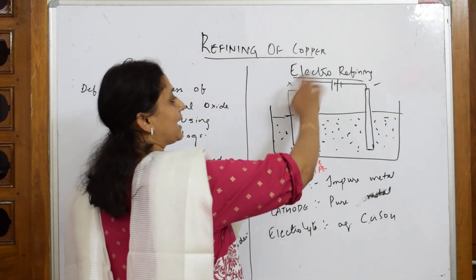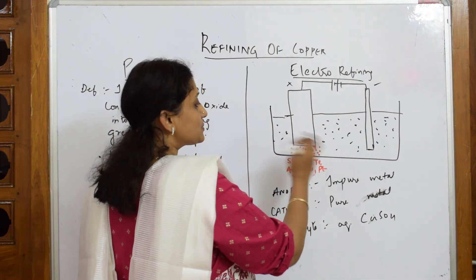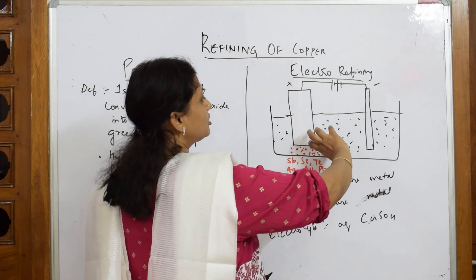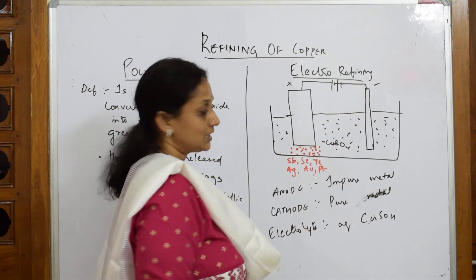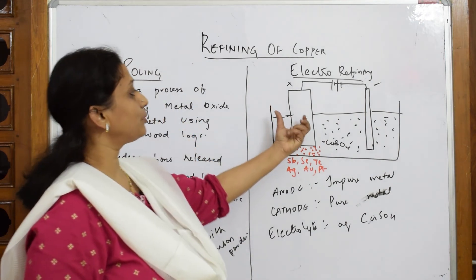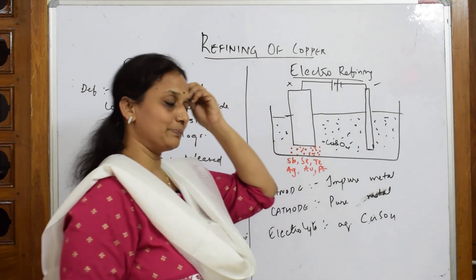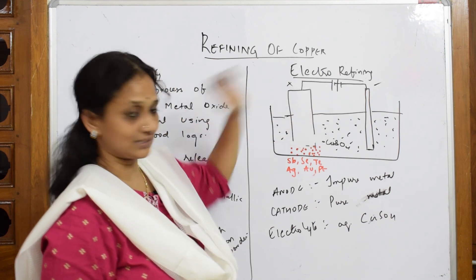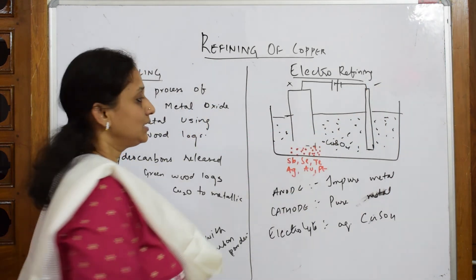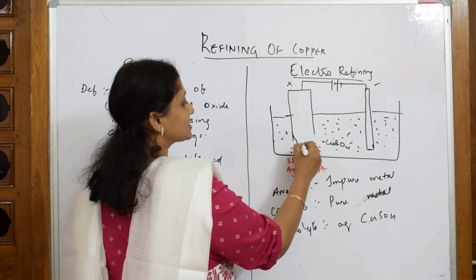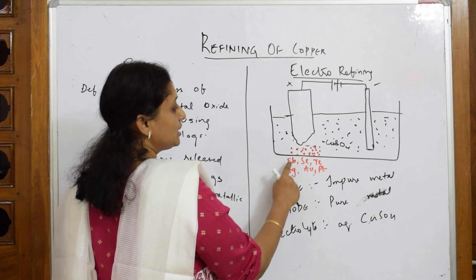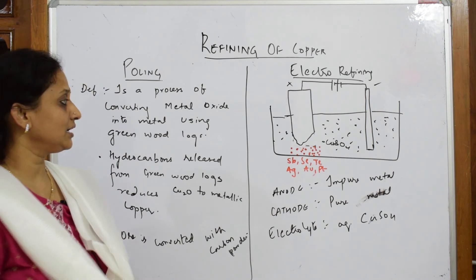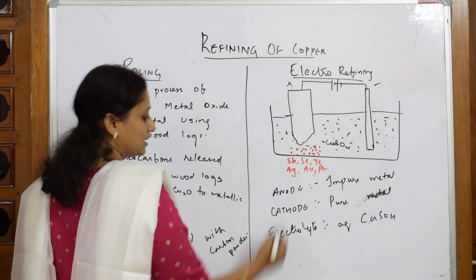When the electrolysis process occurs, electrons move from anode to cathode. The pure metal from the copper sulfate solution goes and settles at the cathode. During this process, since the anode is the impure metal, it becomes thinner and thinner while the cathode becomes thicker and thicker as pure copper deposits on it.